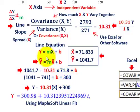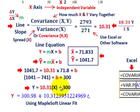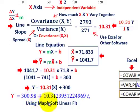Now we have the equation for our line based on covariance: y = 10.31 times x plus 300. Just to cross-check using a Maplesoft linear fit routine, I came up with the same line — y-intercept at 300.98 and slope at 10.32. So the regression analysis confirms our covariance-based calculation.